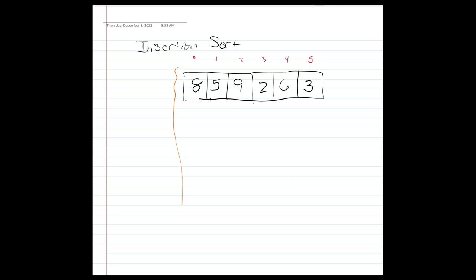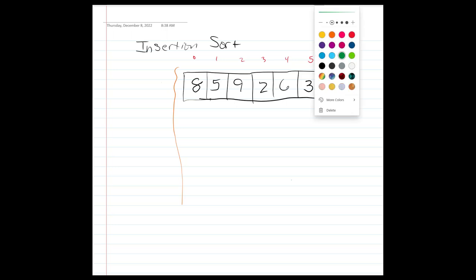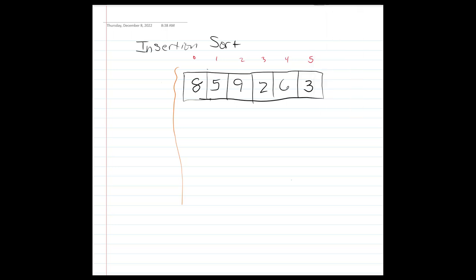The way insertion sort works is that you pick the next item from an unsorted portion of the array and place it into its proper position in the sorted portion. We take the very first element — the number eight — and say there's nothing to do; it's already sorted. Then we do comparisons with the first element to the right of the sorted portion.